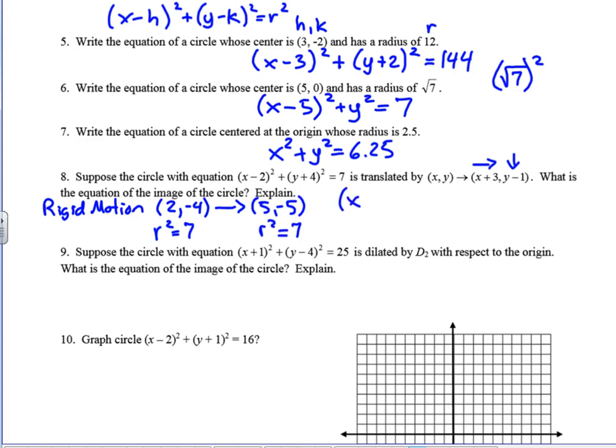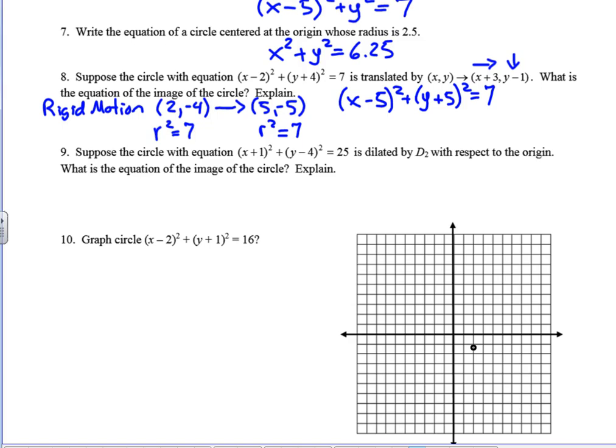So this would be x minus 5, quantity squared, plus y plus 5, quantity squared, equals 7. Okay, does that make sense? Conceptually, sliding the center, but not changing the size of the circle, so our r squared value doesn't change. Okay, now number 9 is a little bit different.